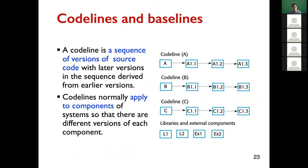A code line is a sequence of versions of a software component or other artifact, with later versions derived from earlier versions. For example, looking at the figure on the right, the first row shows a code line for component A — we have A1.1, A1.2, A1.3, a sequence of different versions where each later version is derived from an earlier one. We also have code lines for components B and C, and for libraries and external components.